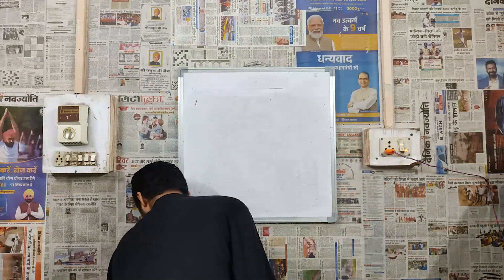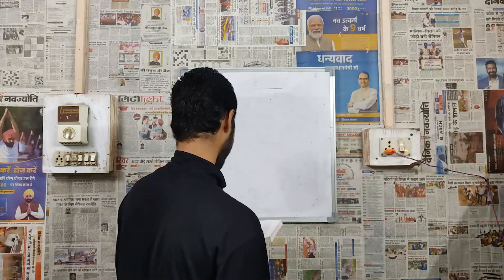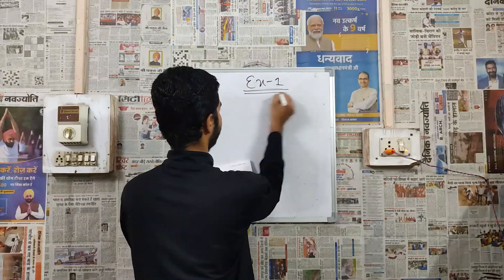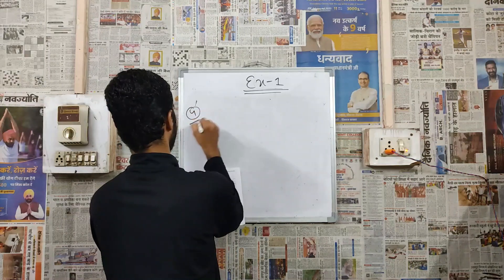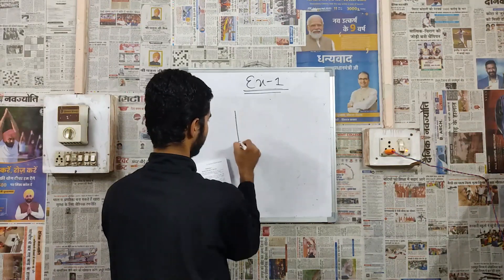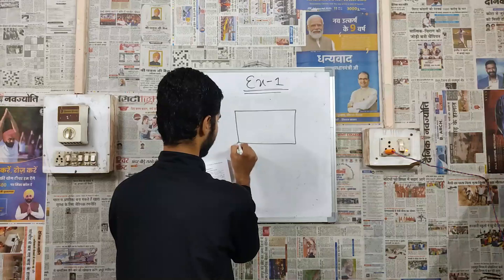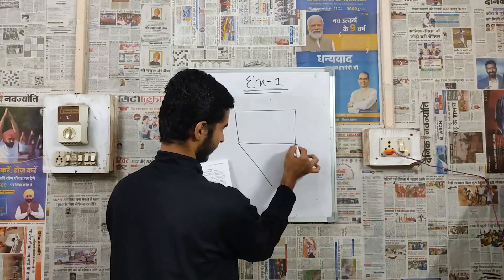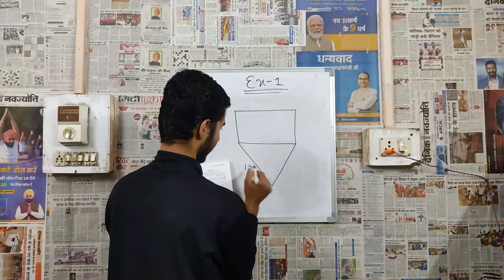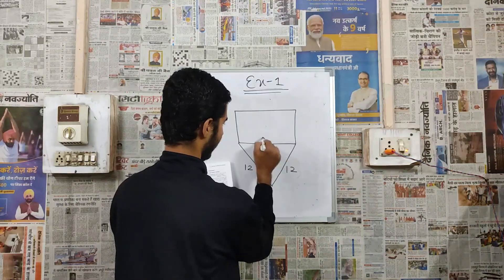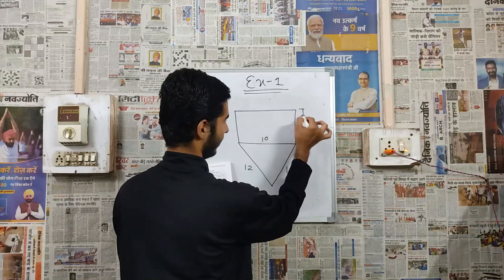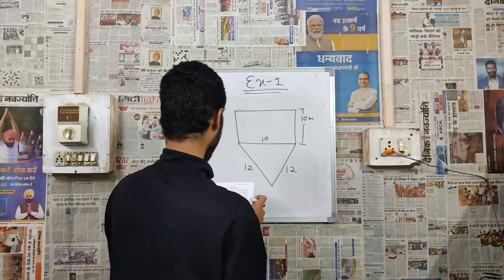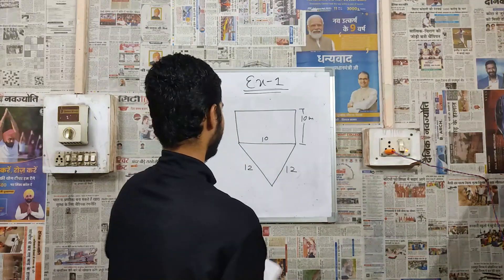So basically what we have to do is — there is one tank. Suppose this is your tank and its bottom consists of a triangle, and its sides are 12, 12, and 10, and this is also 10 meter deep. So we have to find the ullage in this condition.